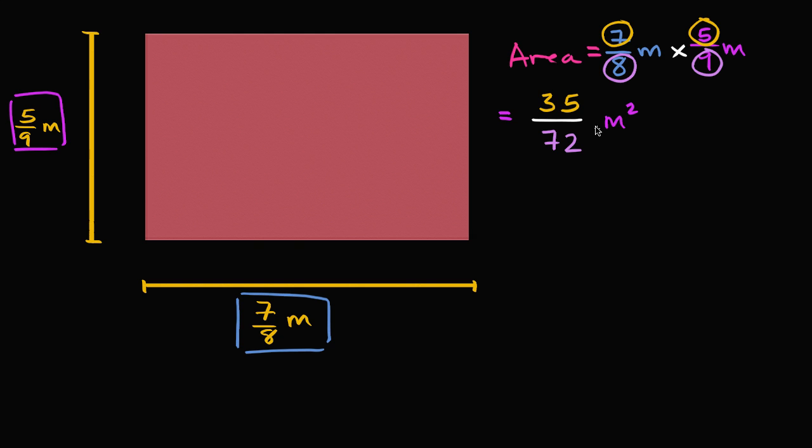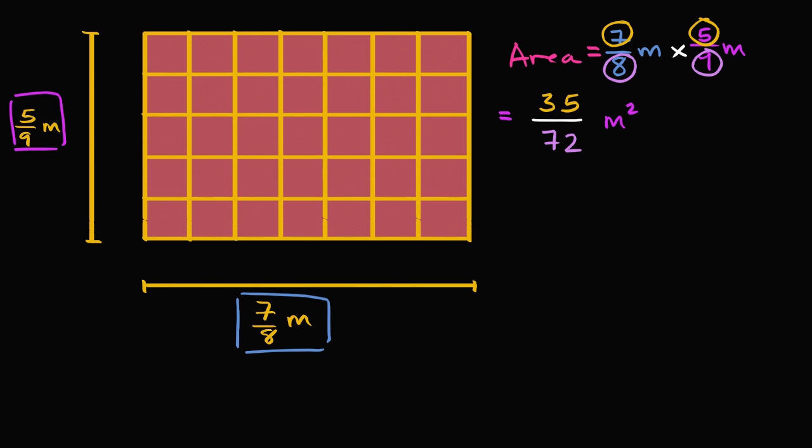But what I want to do now is think a little bit deeper about why that actually makes sense, or just really another way of thinking about it. And to do that, I'm going to split this region into equal rectangles. And we see that we have 7 in the horizontal direction - 1, 2, 3, 4, 5, 6, 7. Or you could say in each row, we have 7 of these rectangles.